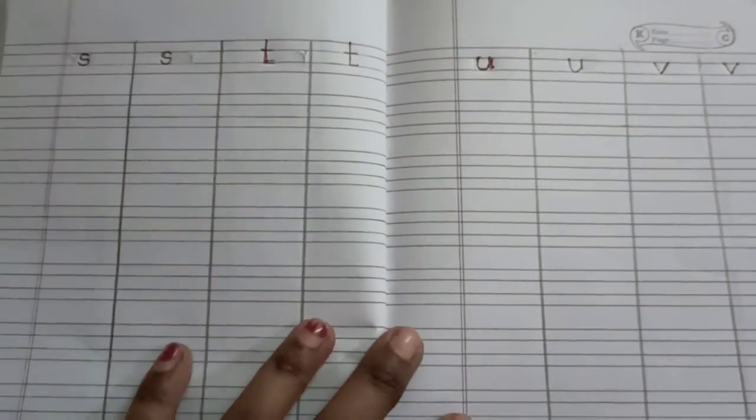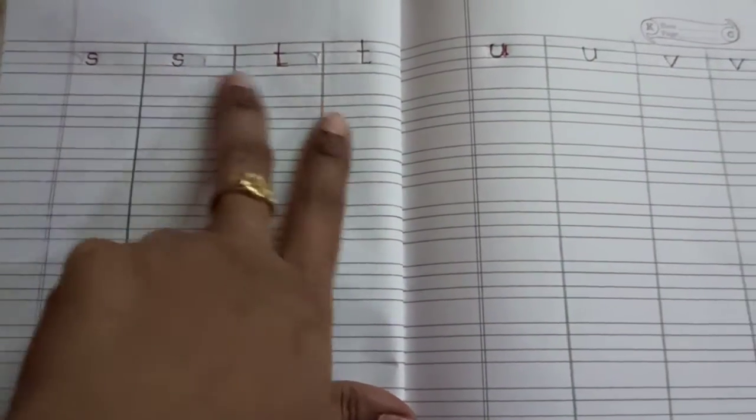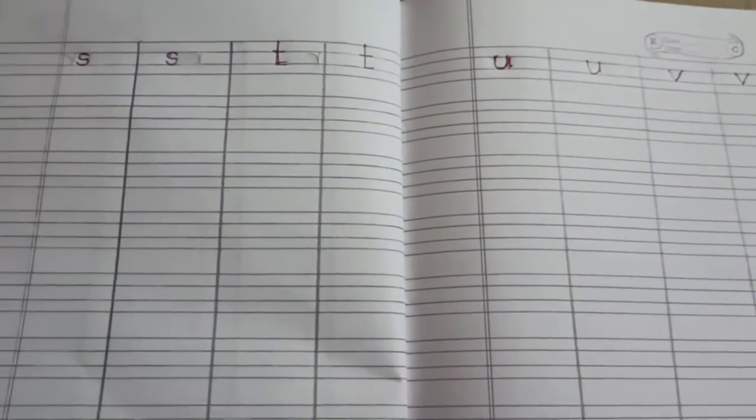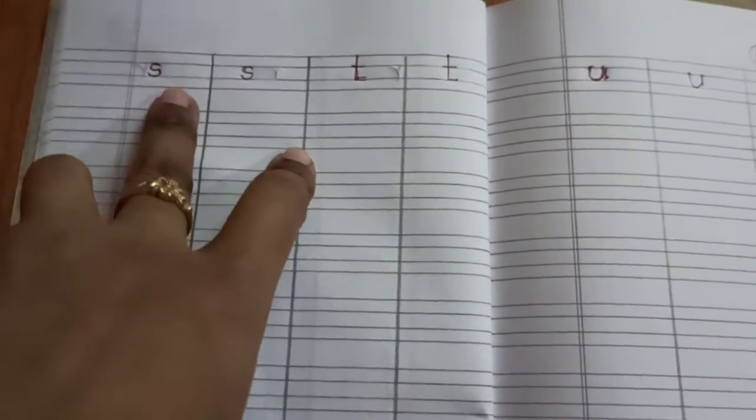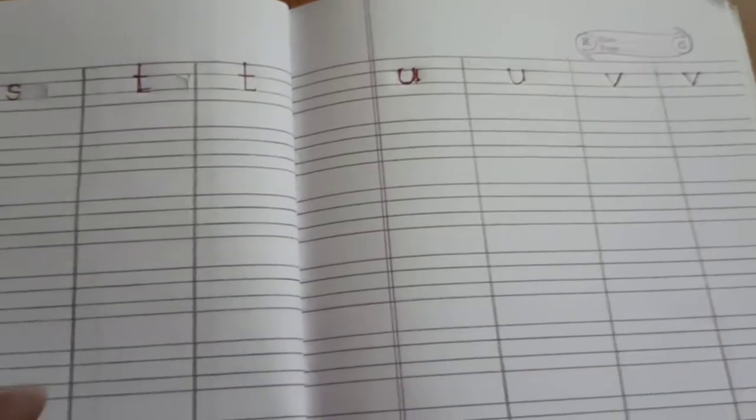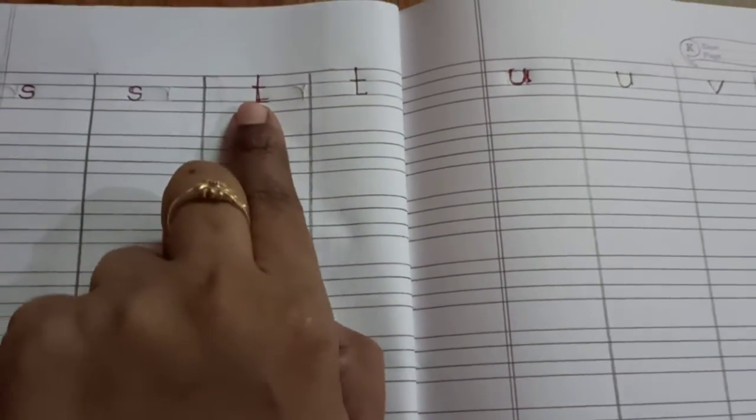Okay. So, children, today homework is S, T, U, V. S is very easy because it's similar to capital letter only. U, V, all these are same. But T is little different.